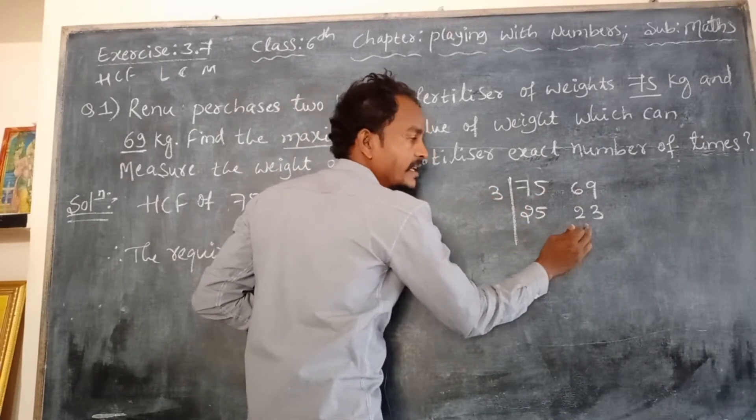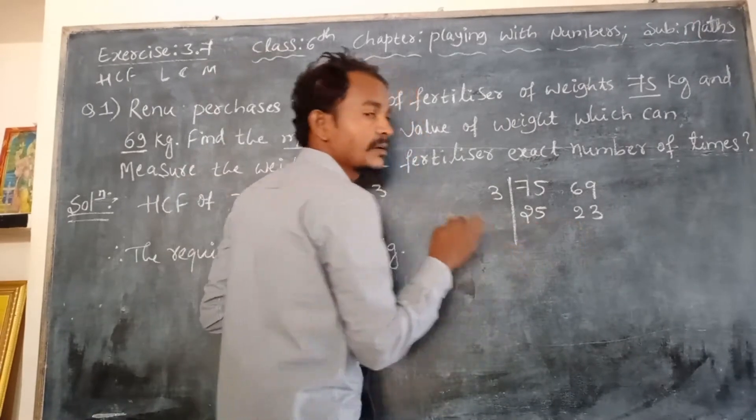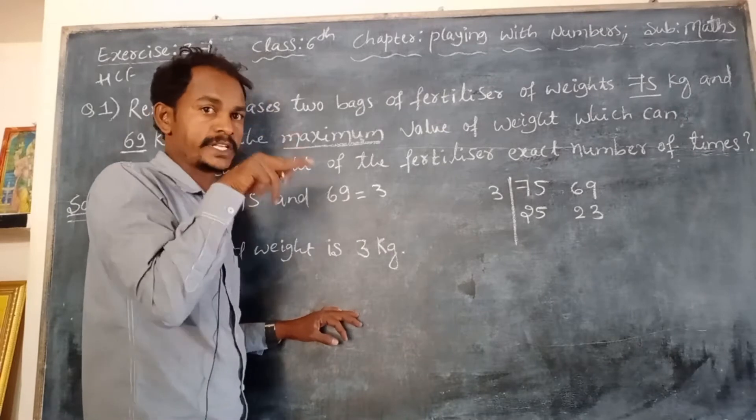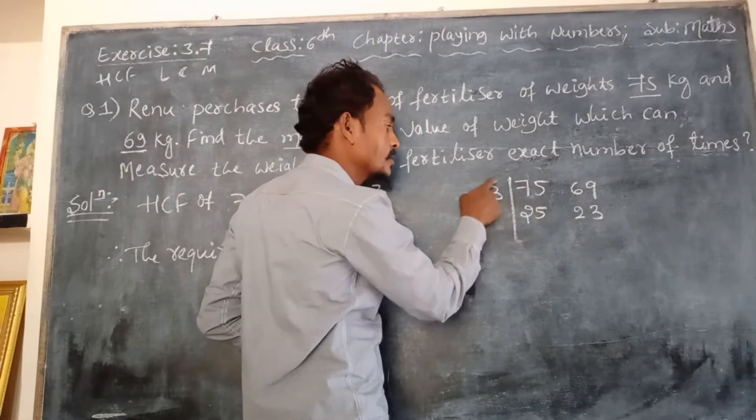But 25 and 23 are not divisible by other numbers. Both numbers are completely divisible by one number only. One is there. If 25 plus 23, one less is divided, so only it will stop.